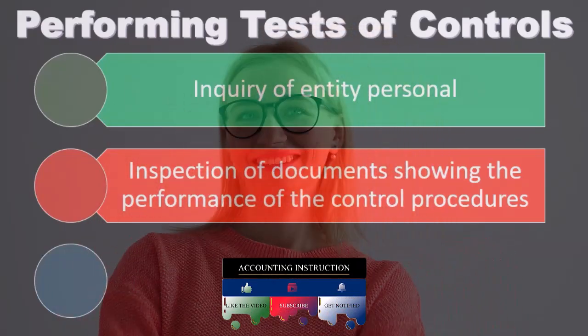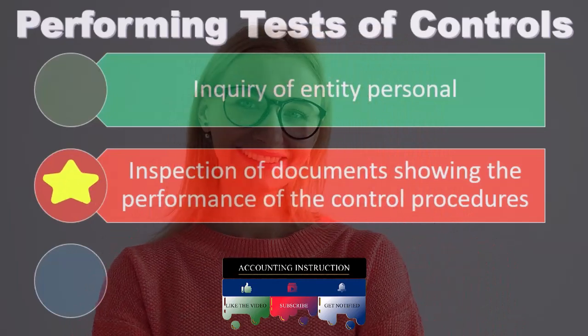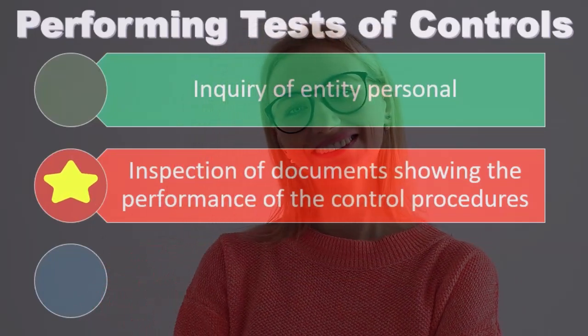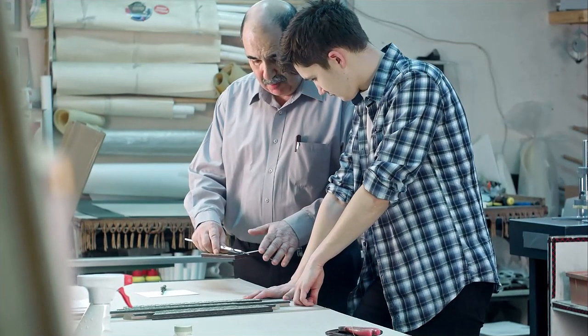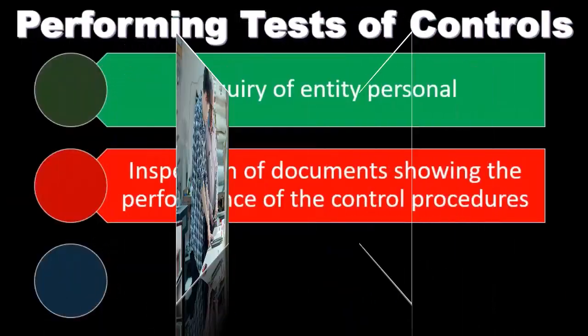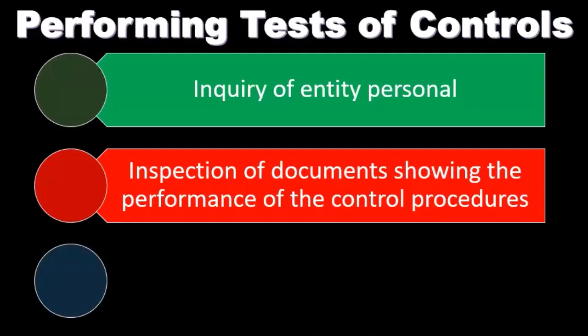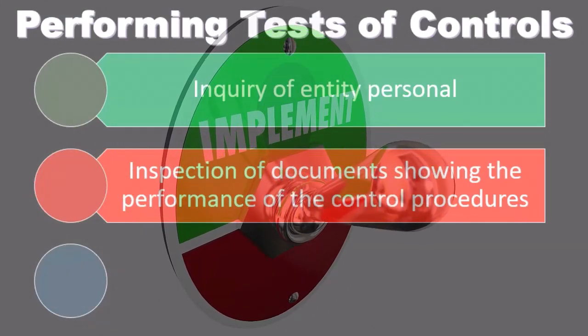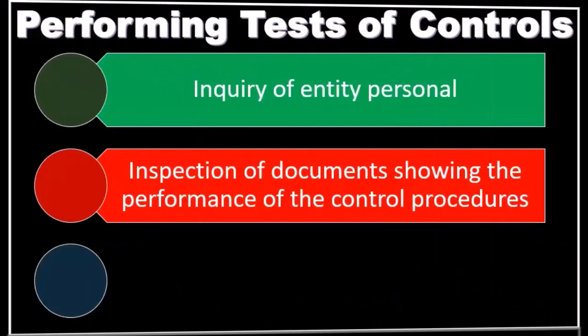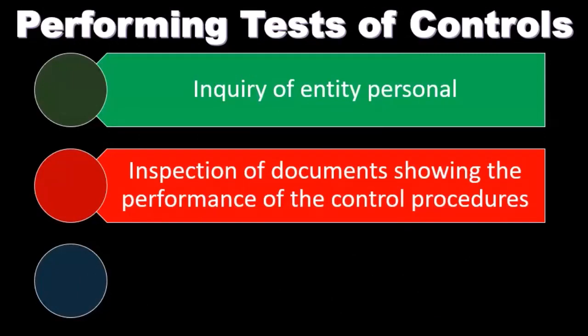The internal controls should be documented in a narration type form typically. Next is inspection of documents showing the performance of the control procedures. Whenever we think about controls we think about two sides: one, do you have internal controls — a good system of internal controls that's mapped out and goes along with the assertions we would expect given your industry? And two, are they actually being implemented? We're going to say, okay, this is what we believe the internal controls are considering our inquiry. Now we're going to see: are they actually happening, are they being put in place? We can do that with inspection of the documents showing the performance of the control procedures.